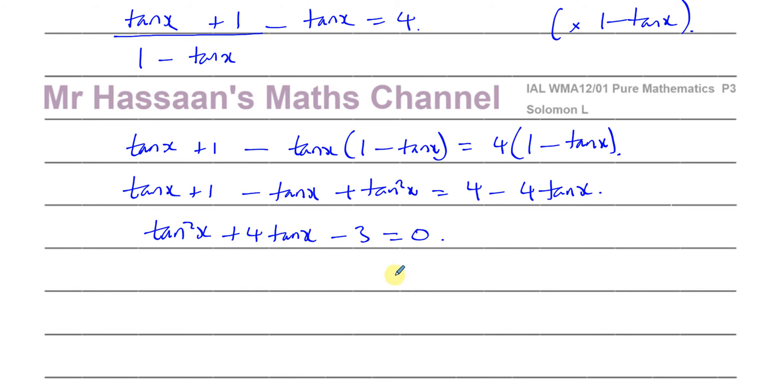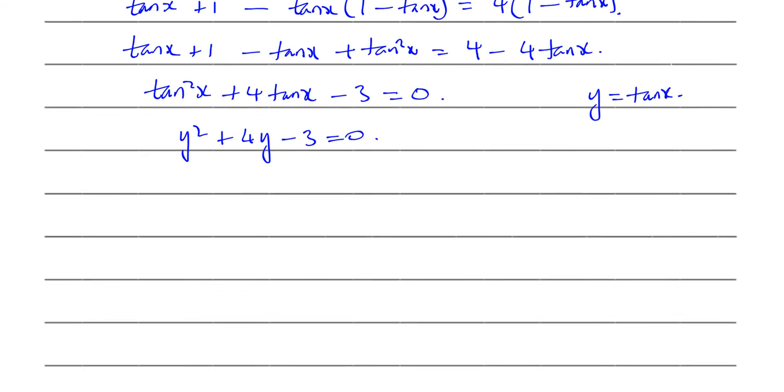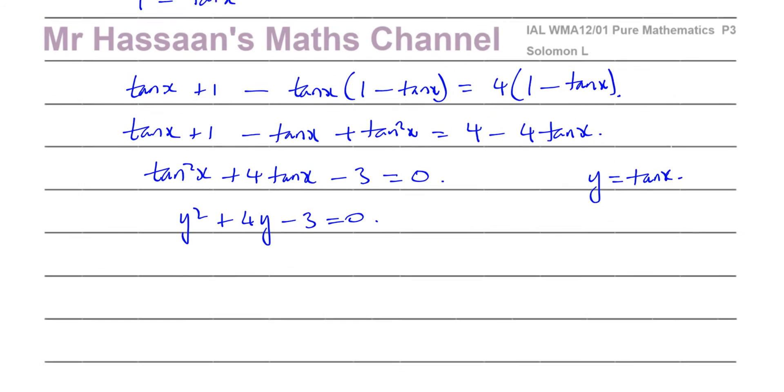So I have this quadratic. Now if you're not comfortable with solving quadratics in terms of trig ratios, what I could do is let another letter, you can't say X, let's say Y equals tan X. So you can replace the tan squared X with Y squared and tan X with Y. So Y squared plus 4Y minus 3 equals 0. Now I want to solve this quadratic equation and find the values of Y, and the values of Y will be the values of tan X.